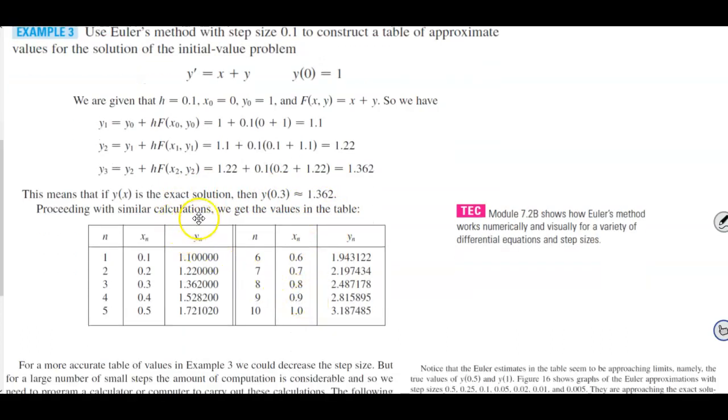Proceeding with similar calculations, we would get the values in the table. So you're going to find out what n is going to equal, and this is going to give you the value of xn, which is increasing by 0.1 since h is 0.1. And then y subscript n, again, is the output for each particular value of n.